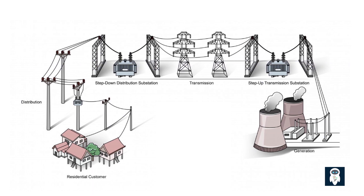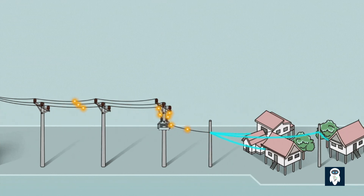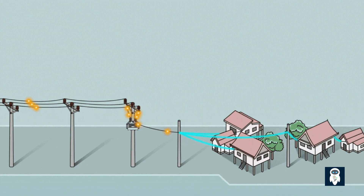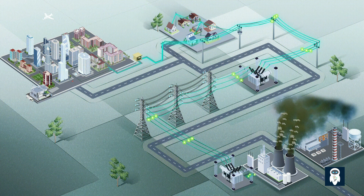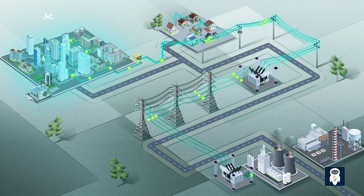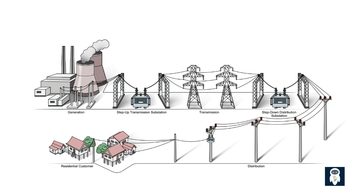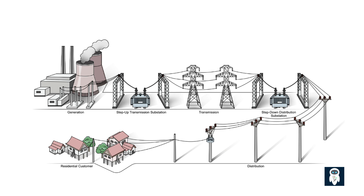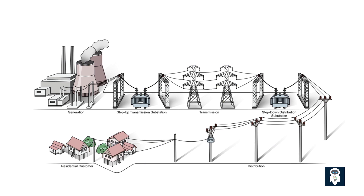Now let's shift our focus to low-voltage distribution lines. These lines are responsible for delivering electricity from the transmission lines to our homes, businesses, and other end-users. Unlike transmission lines, distribution lines transmit electricity at lower voltages, typically ranging from hundreds of volts to a few thousand volts. The reason we only see a single line on each pole in residential areas is primarily related to safety and cost considerations. Distribution lines carry electricity to a smaller geographic area, usually within a neighborhood or a town. This lower-scale distribution network requires less capacity compared to high-voltage transmission lines used for long-distance transmission.